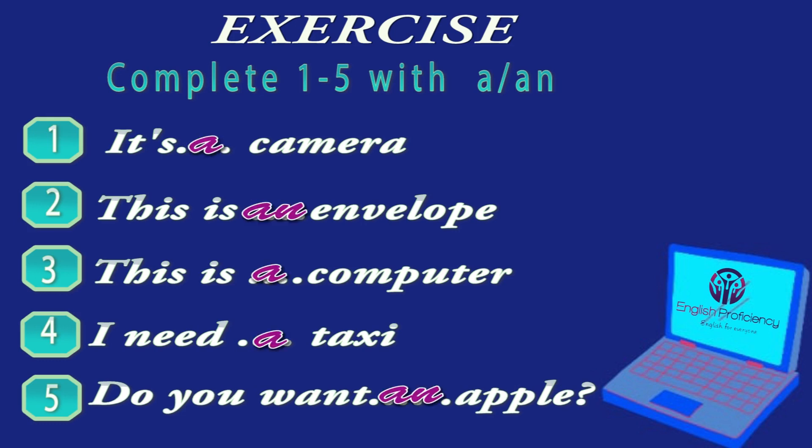Now let's correct. Number one: it's a camera. Number two: this is an envelope. Number three: I have a computer. Number four: I need a taxi. Number five: do you want an apple?